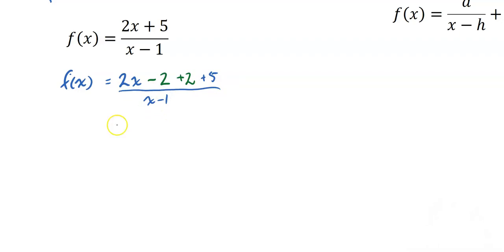What does that do for me? Well, if I keep my 2x minus 2 like that and my plus 2 and my plus 5 becomes 7, I get something that looks like this: 2x minus 2 plus 7 over x minus 1. And now what I'm going to do is split this fraction right here. So I'm going to get 2x minus 2 over x minus 1 plus 7 over x minus 1.